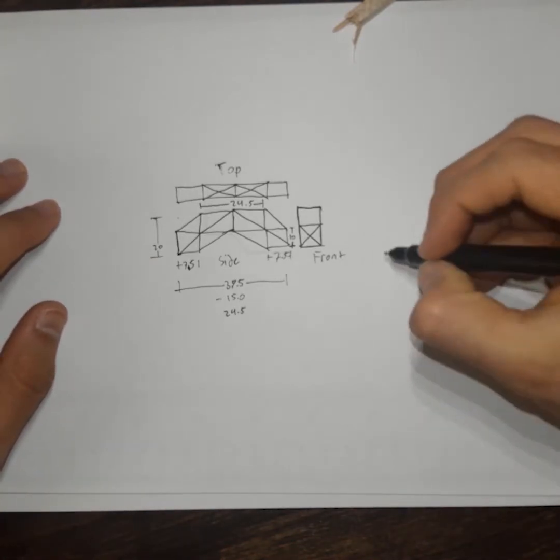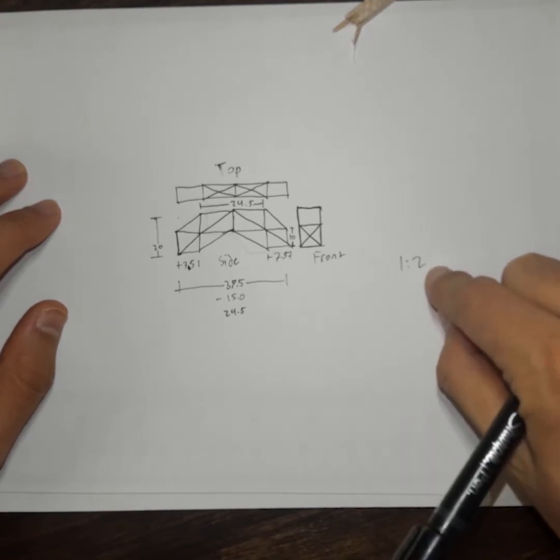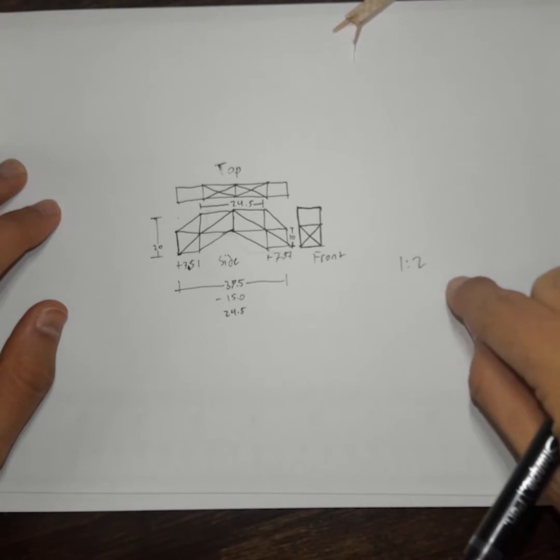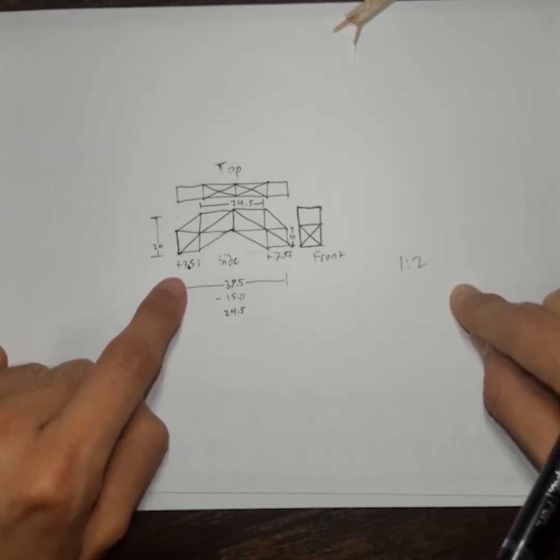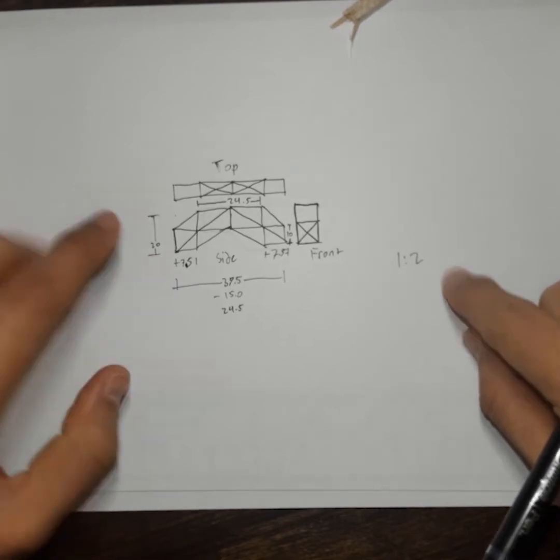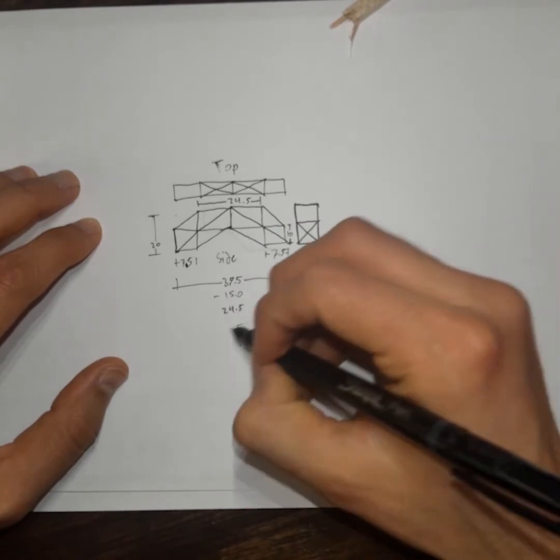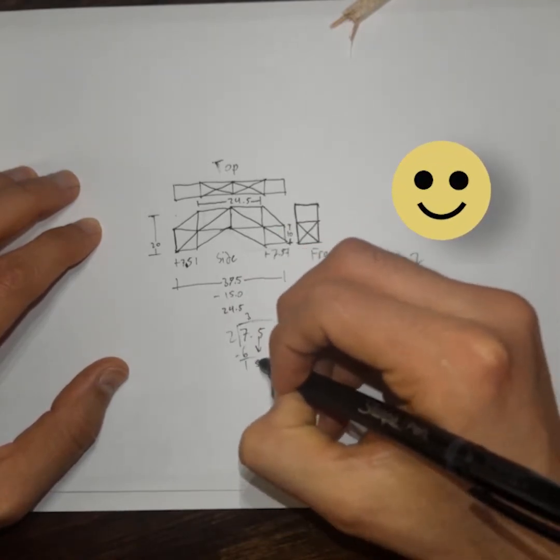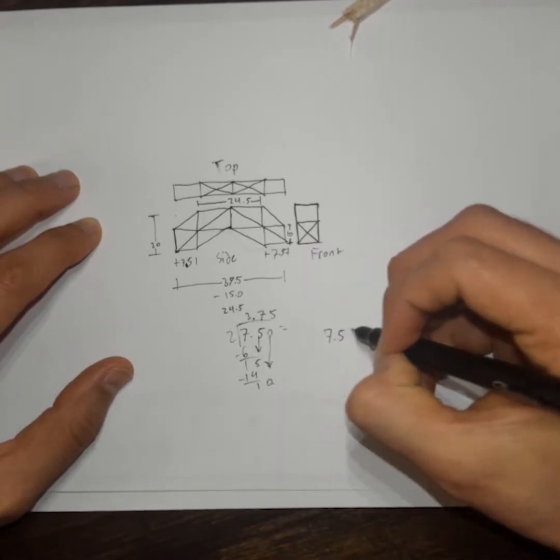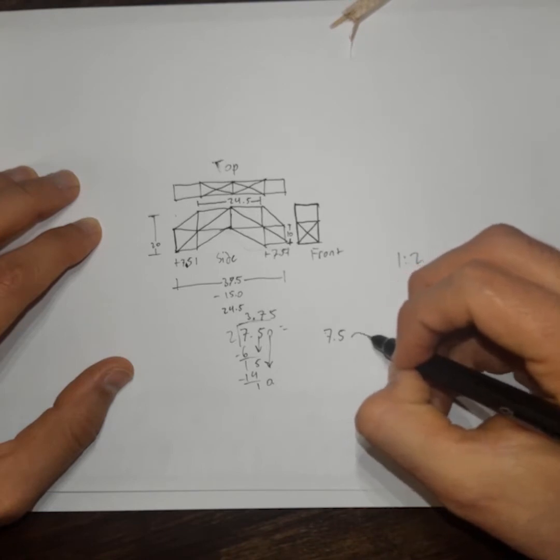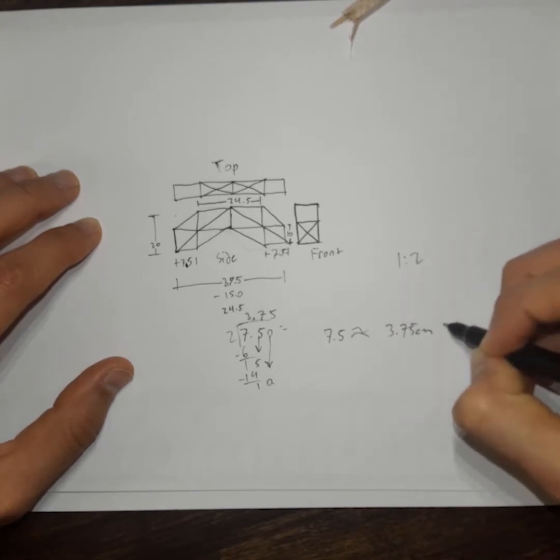Since it's a scale drawing where we're using a scale of 1 to 2, every 1 centimeter will be proportional to 2 centimeters in real life, and every 5 centimeters will be proportional to 10 centimeters in real life. So in this situation, since in real life I am building a bridge that's 7.5 centimeters long, I need to draw half of that on my sheet of paper. So 7.5, we divide that by 2. So 7.5 centimeters in real life will be proportional to 3.75 centimeters in the drawing.